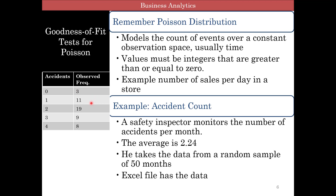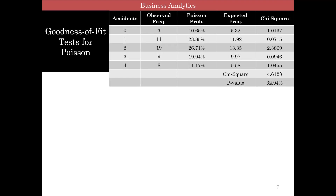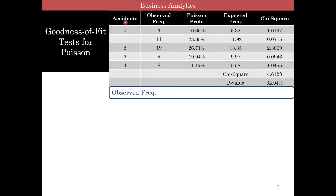From 50 months of data: 0 accidents happened 3 times, 1 accident happened 11 different months, 2 accidents happened 19 different months, 3 happened 9 times, 4 happened 8 times. The Excel file has the data. This is the observed frequency, and I'm going to show you how to use the COUNTIF function to actually calculate this data. Eight months had 4 or more accidents.